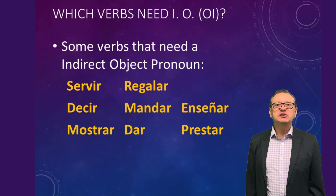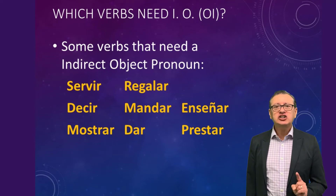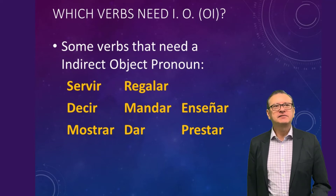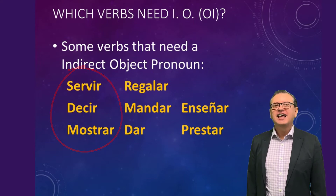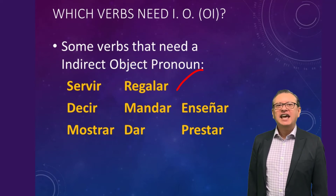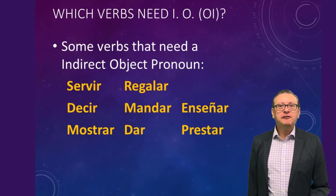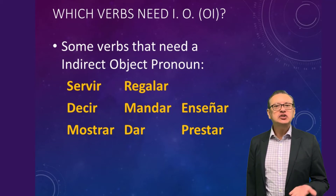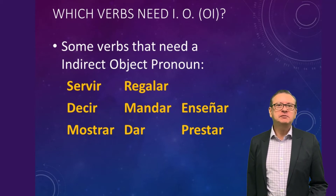Which verbs would use an indirect object? There are certain verbs that immediately make us think this verb has a recipient. Take a look: servir, decir, mostrar, regalar, mandar, dar, enseñar, prestar. All these verbs can be performed for someone or to someone. For example, take the verb servir — 'to serve' — to whom? That's why we need an indirect object pronoun with that verb. Not all verbs require an indirect object pronoun.